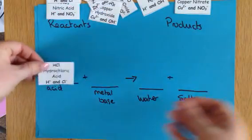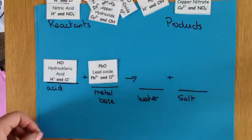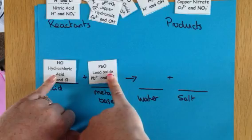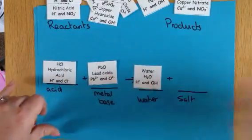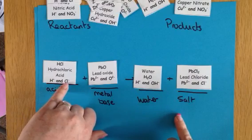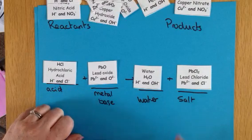And then lastly, we have hydrochloric acid and lead oxide. We take out the bits that make the water, pop those there, and then we are left over with the bits that make lead chloride, the chloride here and the lead here.